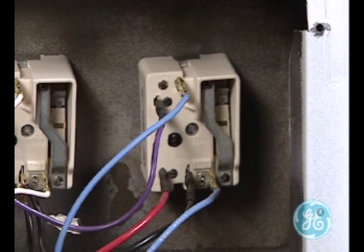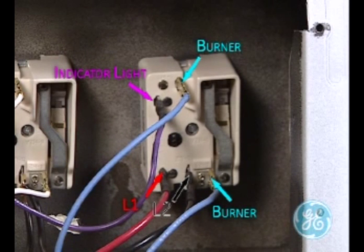On the back of the surface unit switch, note the location for L1, L2, the two blue burner leads, and the surface unit indicator light.